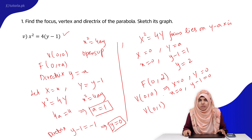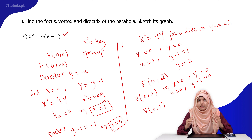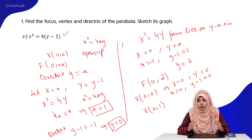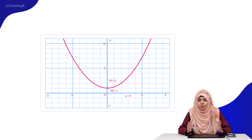Now the focus is (0, 2), meaning x is 0 and y is 2. Our parabola opens up. The vertex is (0, 1), so our parabola starts at y equal to 1. The directrix is y equal to 0. You can see the plotting on your screen — we have plotted the elements. I hope you understand this. Thank you.